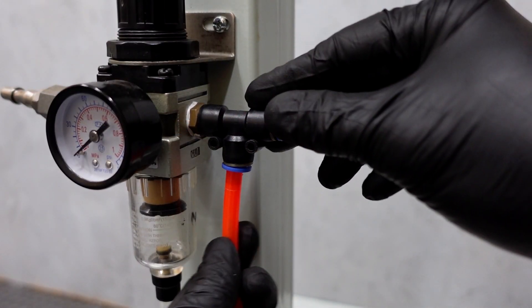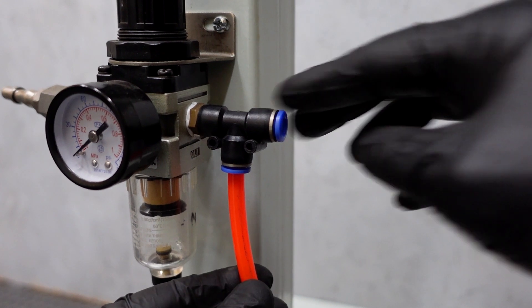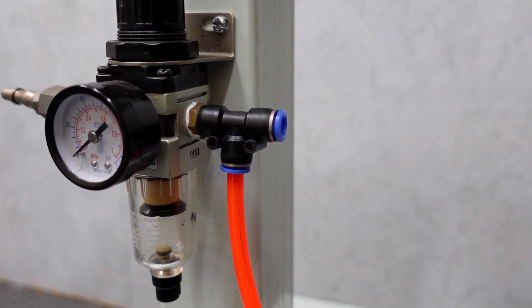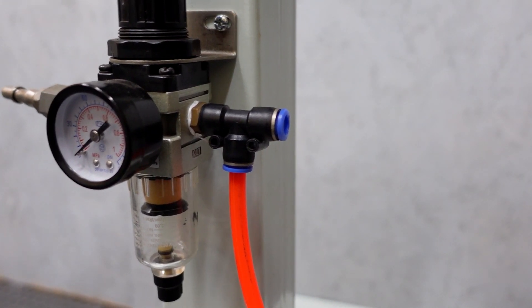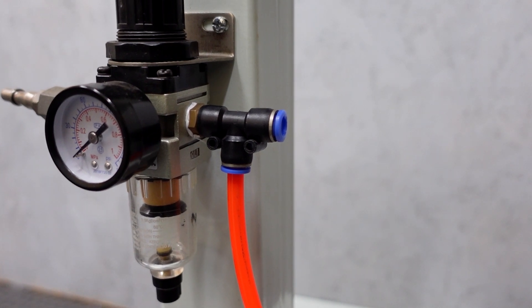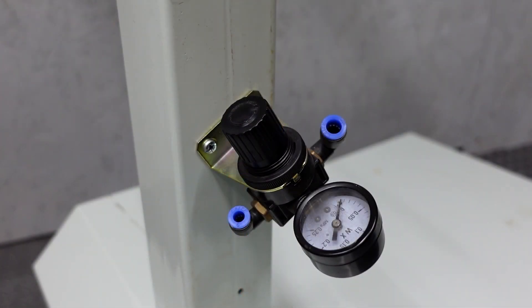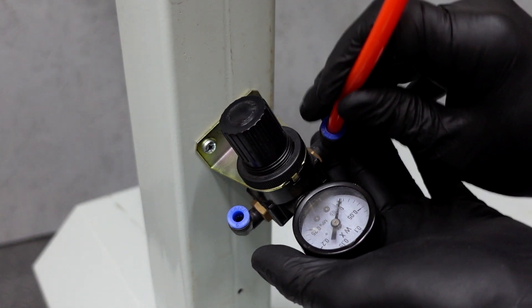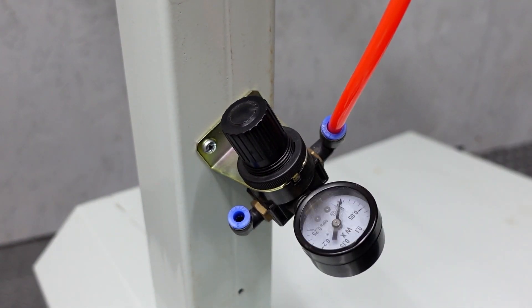We'll connect one of the pipes into either the lower or the side. Doesn't make a difference. And then that will go off down to the bottom. That then attaches to the fluidization adjuster. The other end we'll come back to in a minute.